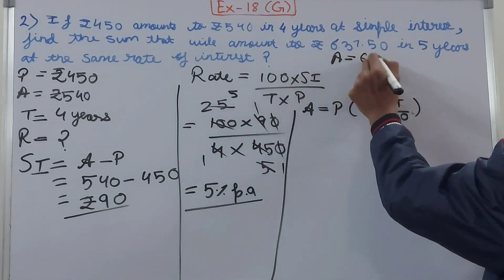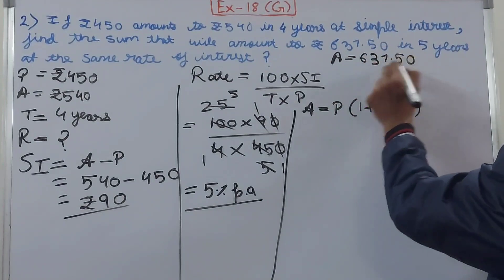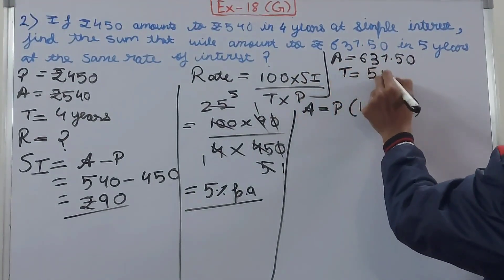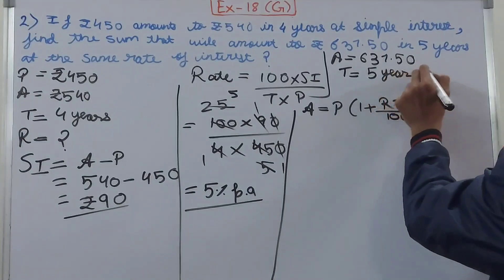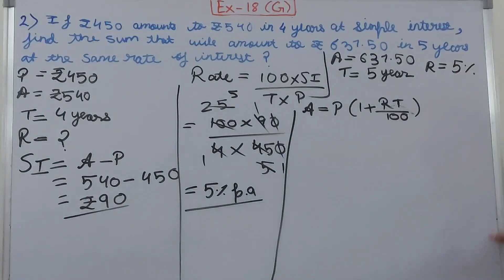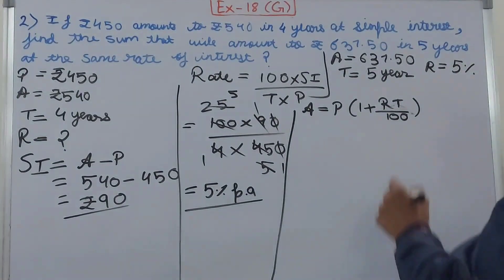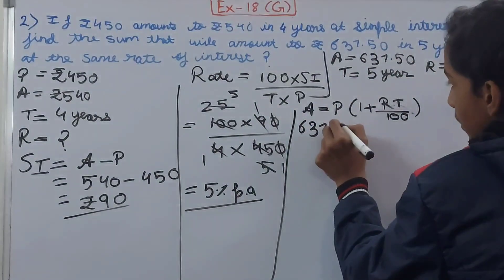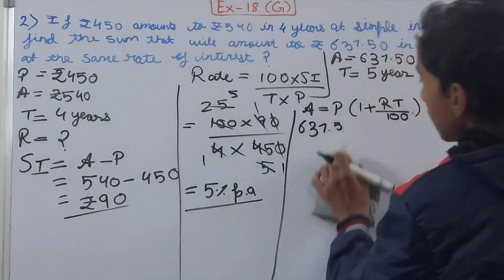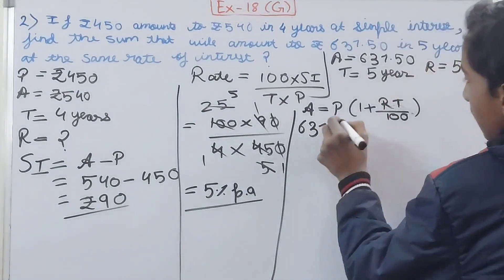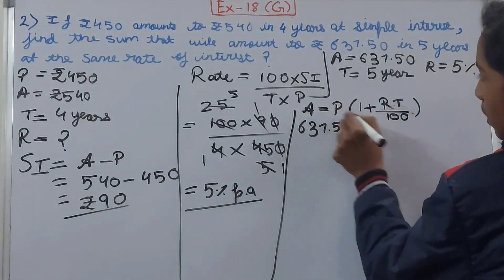We were given with the amount, that was ₹637.50. Then we know the time, that is 5 years, and the rate also we have found out, and that is 5%. Now put the values accordingly. Amount is ₹637.50.